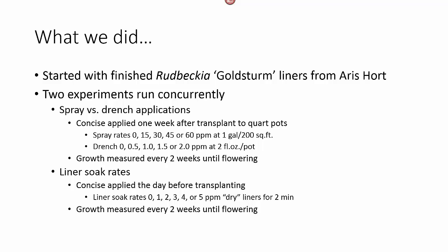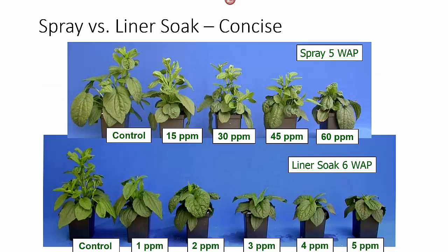We measured growth every two weeks until the plants flowered. The second study was actually looking at different liner soak rates, and the Concise was applied the day before we transplanted the plants into the quart pots. Liner soak rates were up to five parts per million using dry — in other words, ready-for-irrigation — liners, soaked for two minutes. Again, we measured growth every two weeks until flowering.